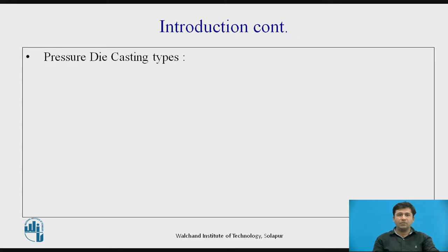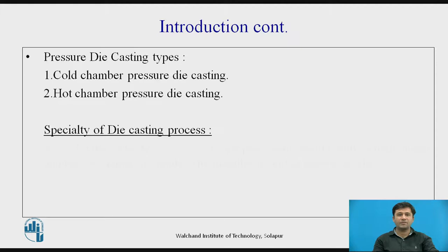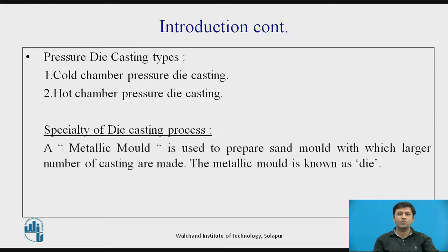Pressure die casting is classified into two types: first, cold chamber pressure die casting, and second, hot chamber pressure die casting. The speciality of the die casting process is that a metallic mold is used to produce a large number of castings. This metallic mold is known as a die.